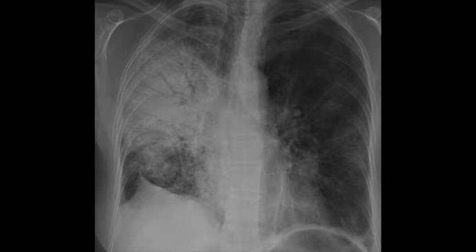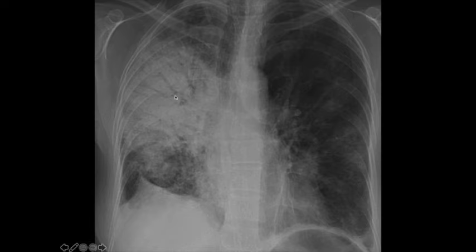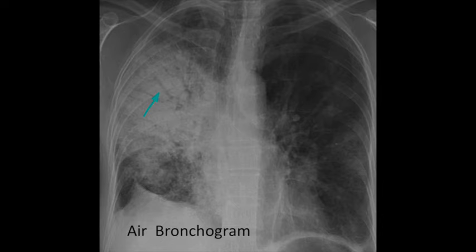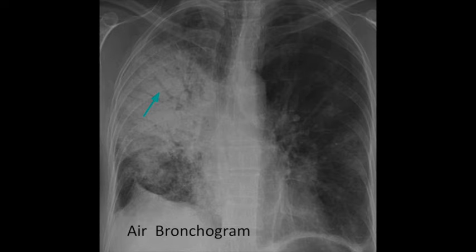Here again we have a fluffy, cloud-like opacity in the right lung — a consolidation. This patient happened to have pneumonia. You'll also notice branch-like lucencies going through this area of consolidation. This is what people refer to as an air bronchogram — normal airways branching through alveoli filled with disease. Two things to know: air bronchograms are used when talking about consolidations or airspace disease, and when you see them it means the airways proximal to those bronchograms are patent, not obstructed.